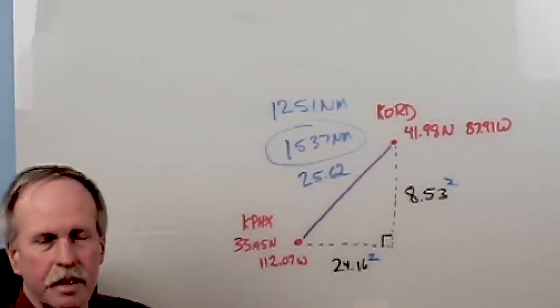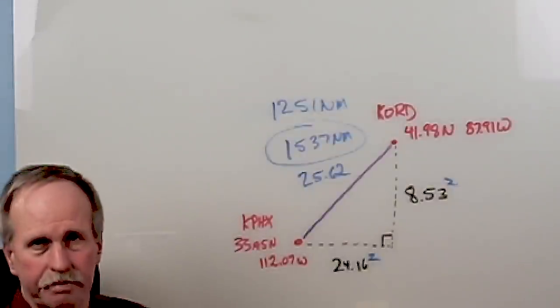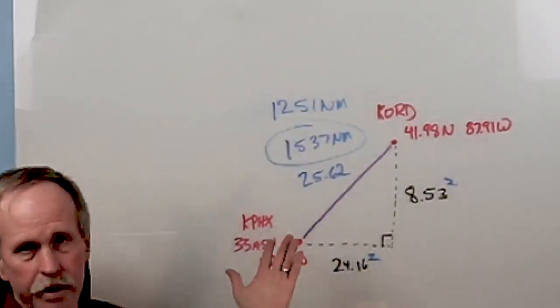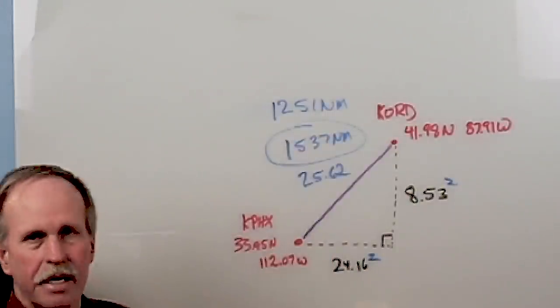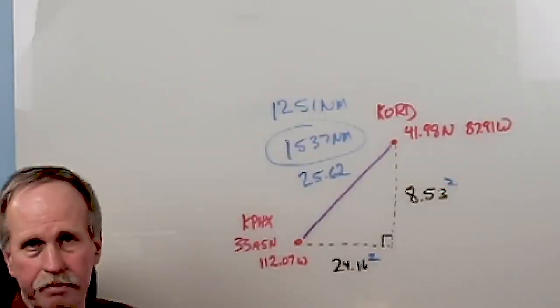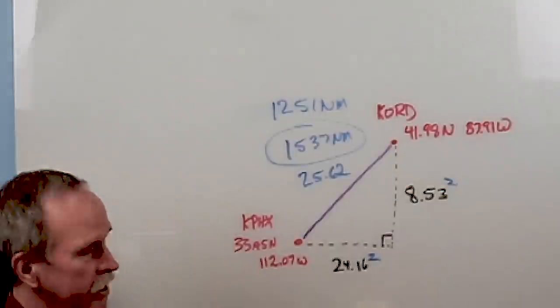So why is that? It's because the Earth is not flat. That absolutely proves it right there. This absolutely rules out the possibility that the Earth can be flat. So how do we find that number?